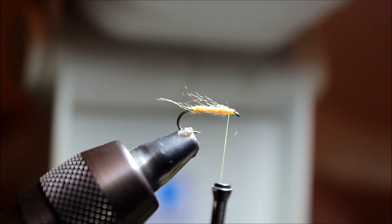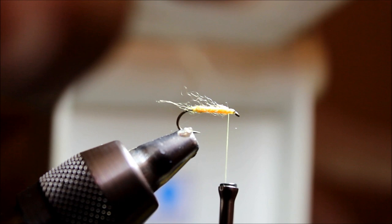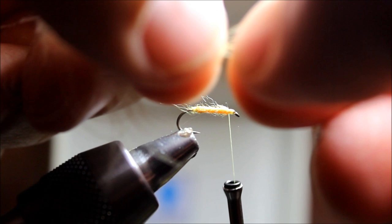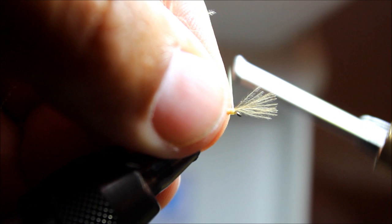I'm going to take a brown Trout Hunter CDC feather. I'm going to V out the tip here a little bit. Except I'm not going to cut it out. I'm going to tie it in by the tip. The curvature is facing down. I'm going to tie that in just like that.